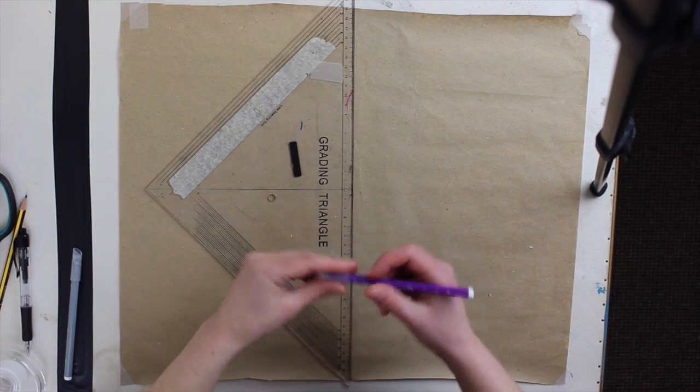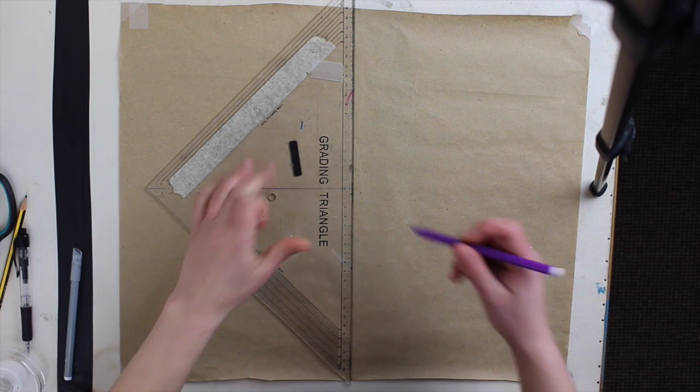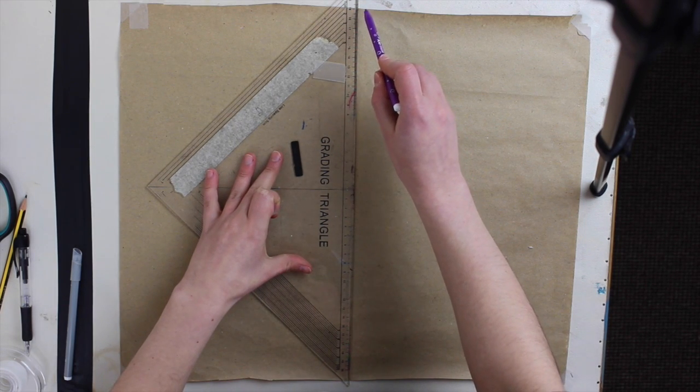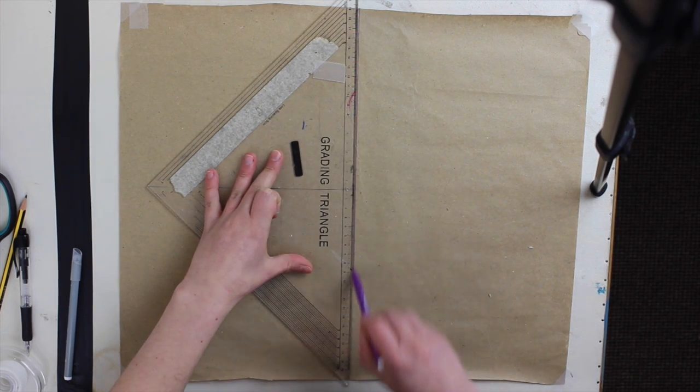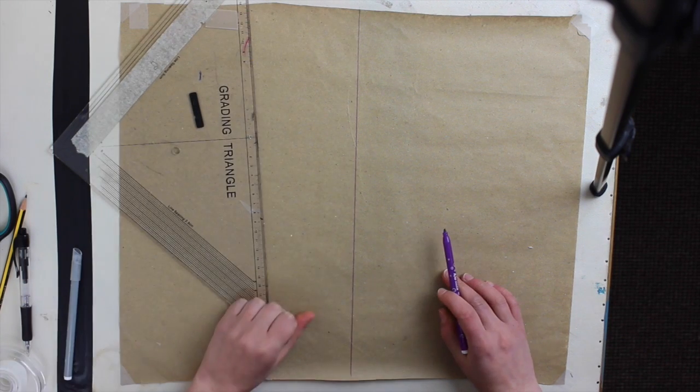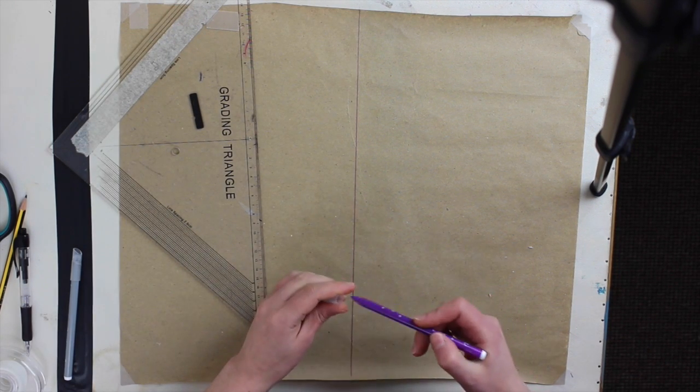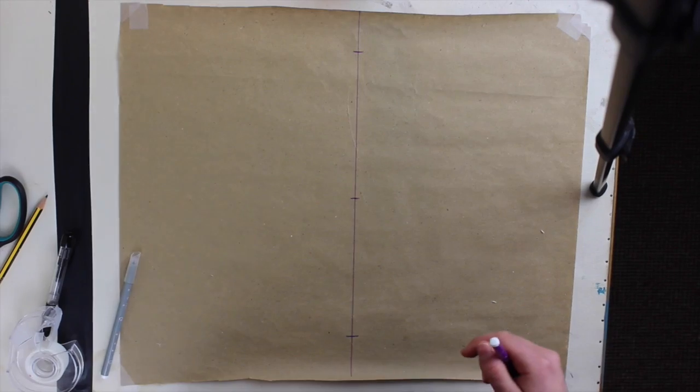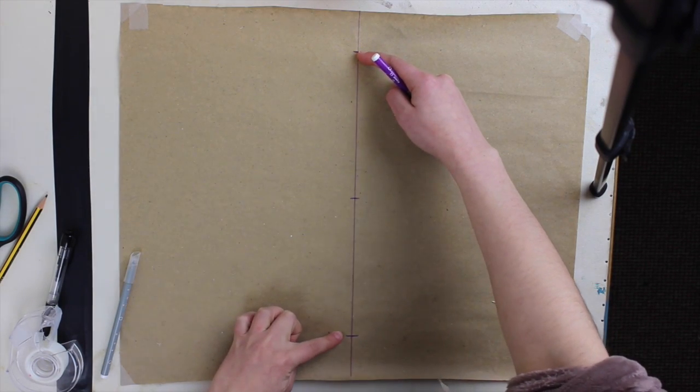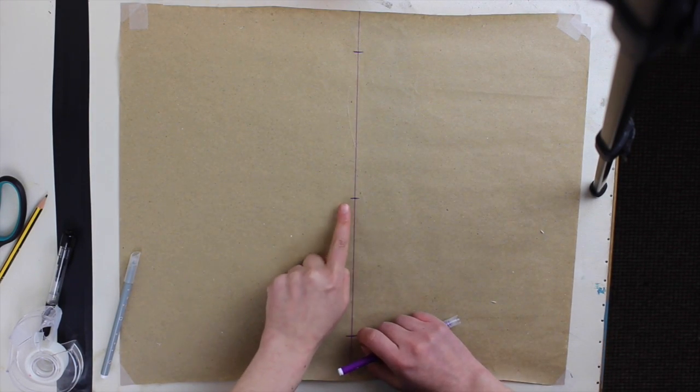So you're going to take your paper and in the middle of it we're going to draw a straight line. So that's going to be our center front. How big this line is going to be will depend on the size of your baby.